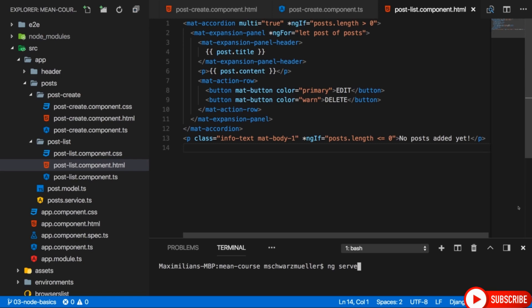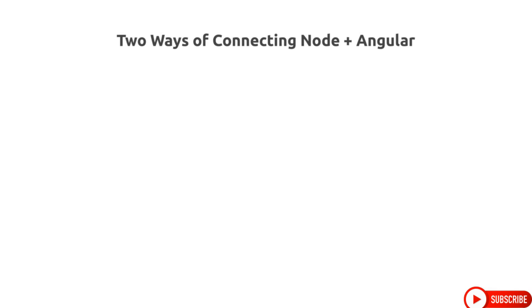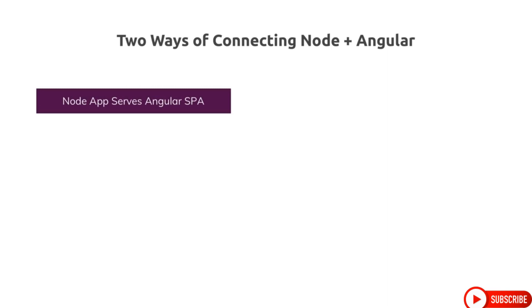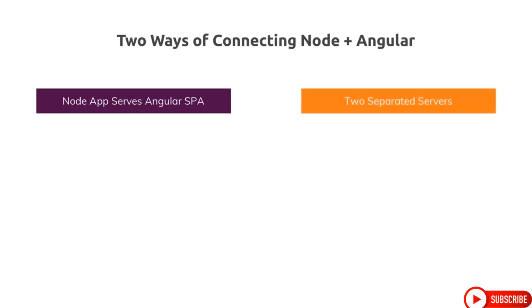There's one important thing to understand regarding the way Angular and a Node backend — or any backend — work together. We have two ways of connecting them. The first approach: we have a Node Express application that serves the Angular single-page application as part of it. It contains our other server-side logic, but also has a certain URL endpoint from which it returns the Angular SPA. The alternative is two separate servers — a Node Express server for business logic, authentication, and data storage, and then a separate static host which only returns our Angular SPA. In this course, we will actually see both approaches, since they only differ when we reach the deployment section.